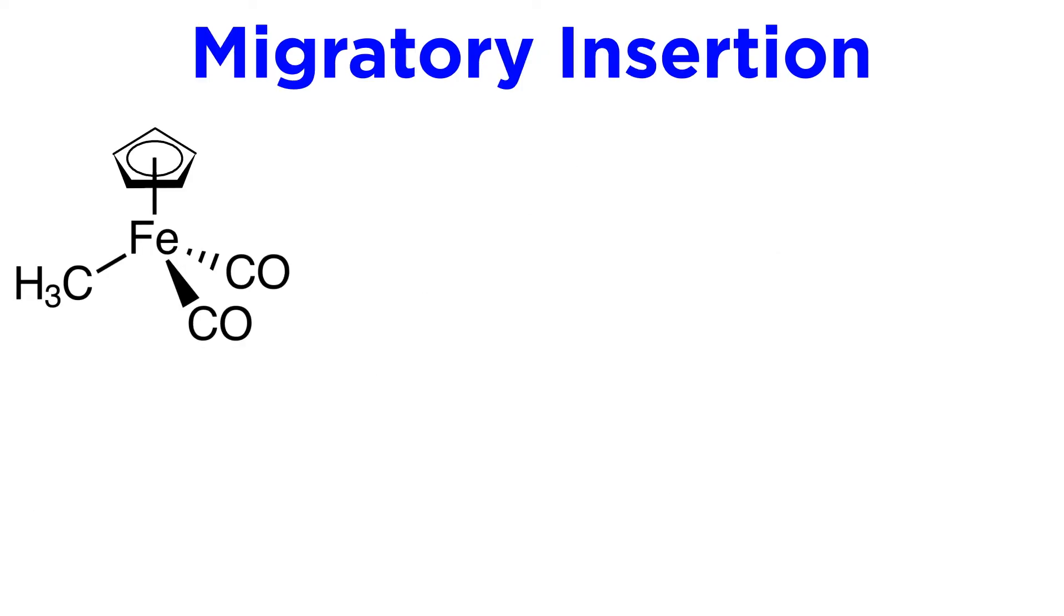Now let's look at some complexes and discuss how they react. Here is an iron complex with a CP ligand, two carbonyls, and a methanide. Triphenylphosphine is available to react, but is there room? The ligand charges total to two minus, so iron must be two plus.